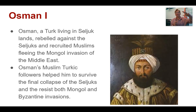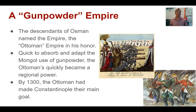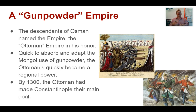The Byzantines were trying to take advantage of the collapse of the Seljuks and work their way in, but Osman was able to push them back too — being pushed from both sides and resisting both Mongol and Byzantine pressure. He does this in part with gunpowder. The Ottoman Empire is named after Osman; his followers named the empire in his honor after his death. Osman and his followers were very quick to absorb and adapt to the successful Mongol practices — gunpowder — and with this harnessing of gunpowder, the Ottoman Empire quickly becomes a regional power.